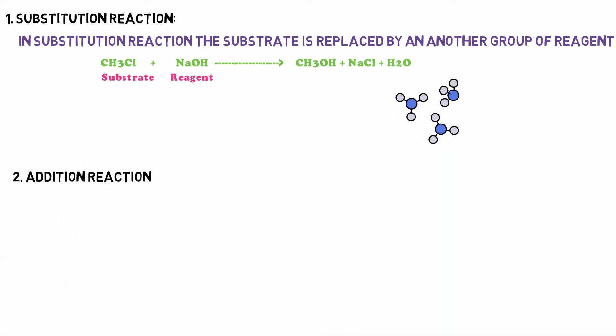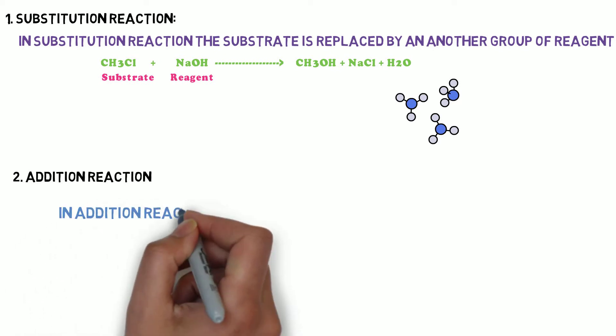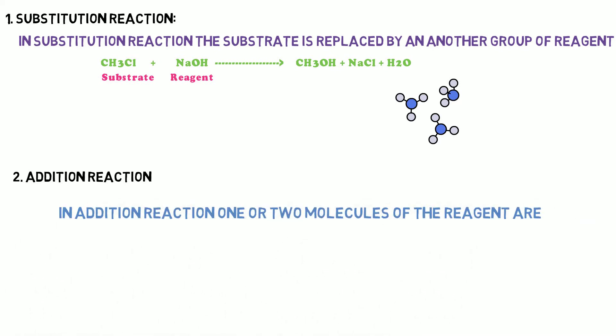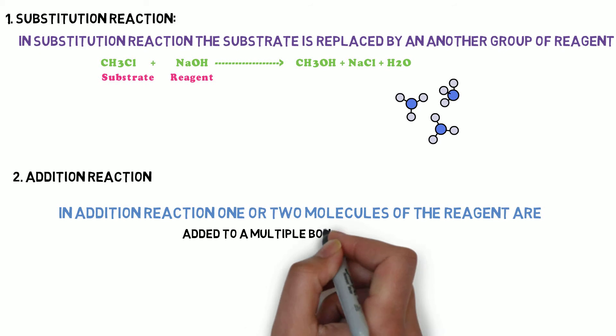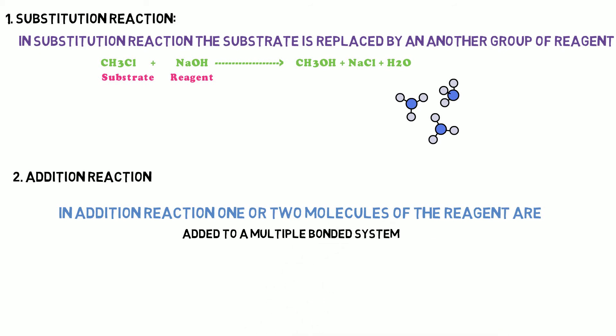Then addition reaction. In addition reaction, one or two molecules of the reagent are added to a multiple bonded system. In this, the double bonded ethene when reacts with hydrogen atom, it gives ethane.